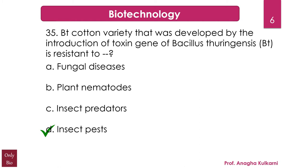BT cotton is a genetically modified organism — a pest-resistant plant cotton variety which produces an insecticide to combat bollworm. Strains of Bacillus thuringiensis produce around 200 different BT toxins, each harmful to different insects. BT toxins are insecticidal to larvae of moths, butterflies, beetles, cotton bollworms, and flies, but harmless to other life forms. The BT toxin gene inserted into cotton causes it to produce this natural insecticide in its tissues, eliminating the need for broad-spectrum insecticides and sparing natural insect predators. Note: do not confuse options C (insect predators) and D (insect pests).